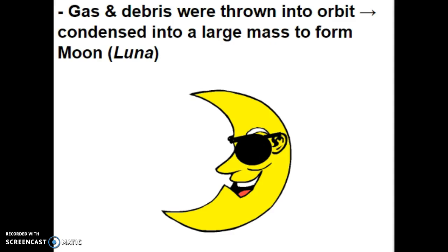This has been Physical Science 2, Chapter 7, Part 3 on the Sun-Moon-Earth System.